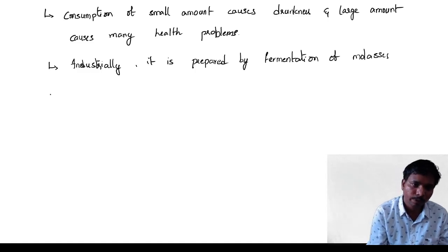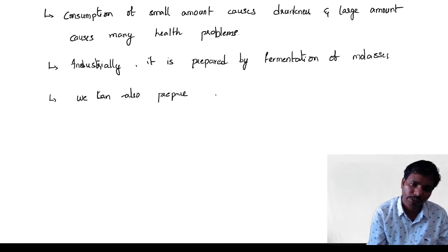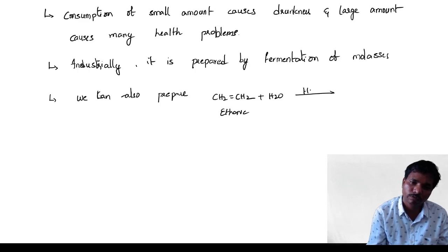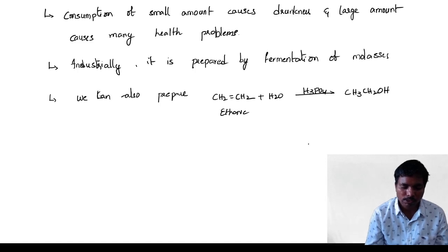We can also prepare ethanol from ethene. Ethene, CH₂=CH₂, with water added and using a catalyst H₃PO₄, gives CH₃CH₂OH — ethanol. So it can be prepared this way as well.